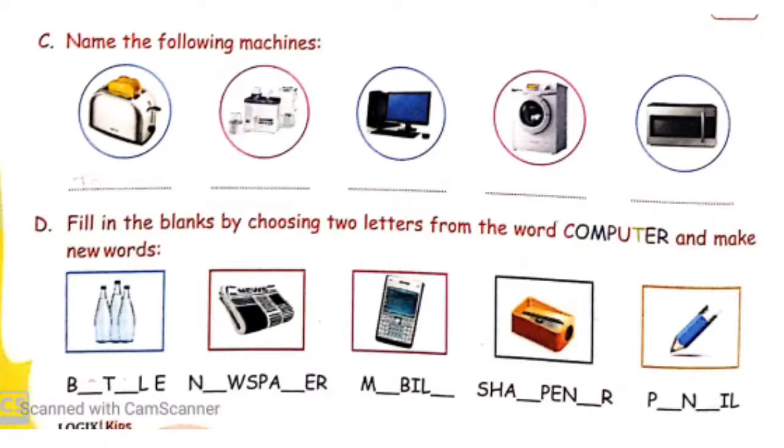And your third exercise C: Name the following machines. You have to do this exercise yourself. And you have to identify the names of the pictures given in this exercise and write it down.